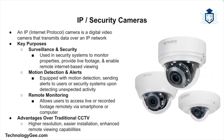Now let's move on to IP and security cameras. An IP camera, or internet protocol camera, is a type of digital video camera that transmits data over an IP network. Key purposes include surveillance and security — IP cameras are widely used to monitor properties, provide live footage, and enable remote viewing. They also offer motion detection, sending alerts when unexpected activity is detected, and remote monitoring via smartphone or computer. Unlike traditional CCTV cameras, IP cameras offer higher resolution, easier installation, and remote capabilities.